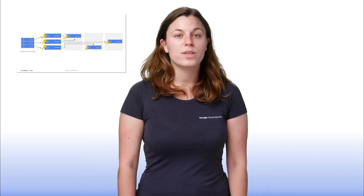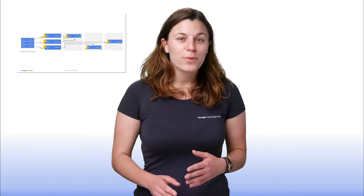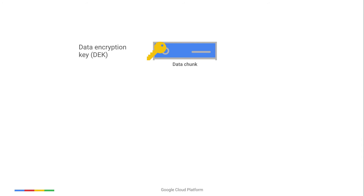Access control lists ensure that each chunk can be decrypted only by authorized Google services using data encryption keys. These keys encrypt data chunks and are stored with the data chunks themselves. We never store unencrypted keys on disk. In fact, the data encryption keys are themselves encrypted with another key for storage, called a key encryption key. This is commonly referred to as envelope encryption because one key is enveloping another.